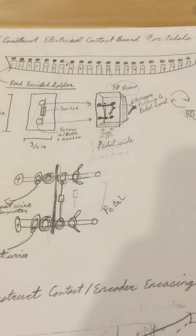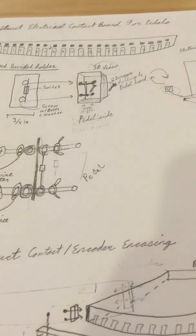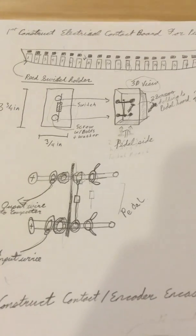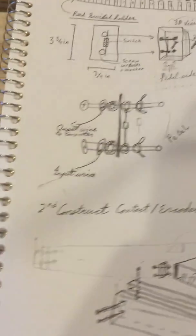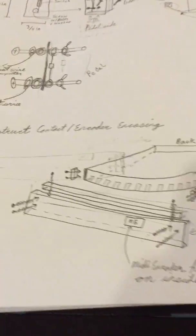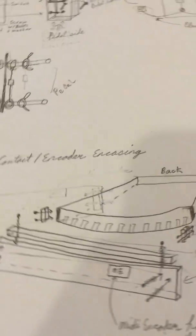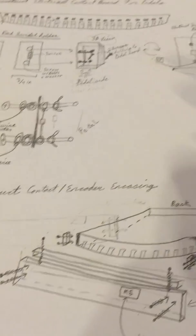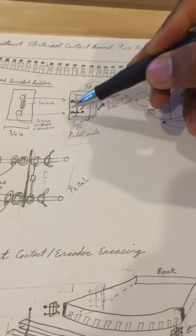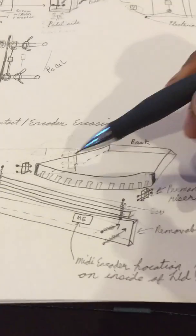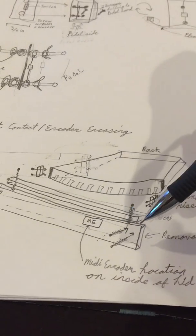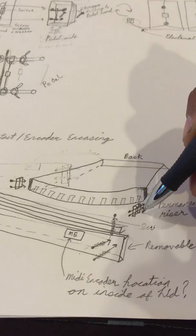That's pretty much the circuit. We're going to have 32 of these systems set up because there's 32 notes on our pedal board, and this could be modified for each individual issue that you may be using. The next step will be to construct our contact slash encoder encasement, which is going to protect our reed switches on the top end of our pedal board.